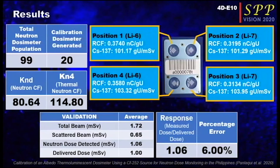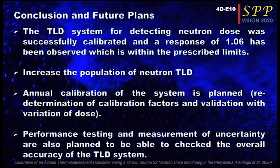The reader calibration factor as well as the cesium-137 response is shown in the figure of the neutron TLD per crystal positions. The neutron calibration factors were computed as well. Moreover, the validation test shows that a detected error of 6% was calculated. To conclude, the neutron TLD was successfully calibrated and the validation test resulted in an acceptable response.